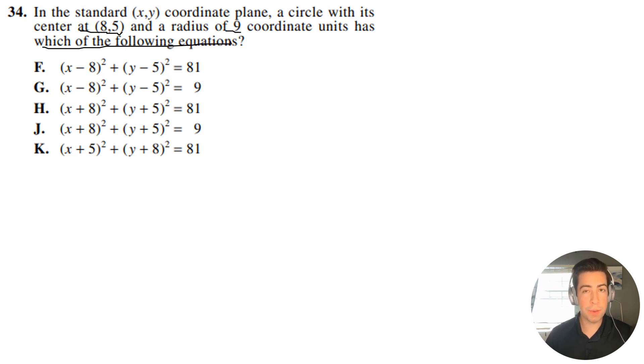This is one of the few things you actually have to memorize for these standardized exams. The formula is (x - a)² + (y - b)² = r², where (a,b) is the center and r is the radius. Sometimes I write this with h or k, but it doesn't really matter.